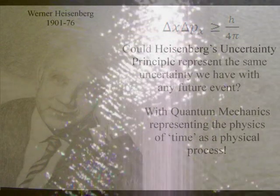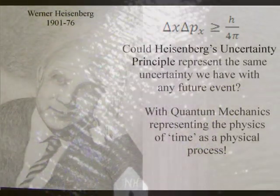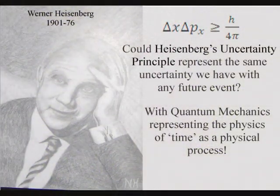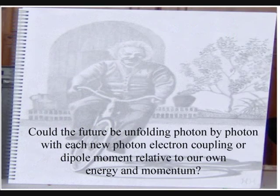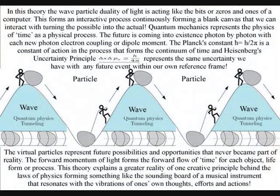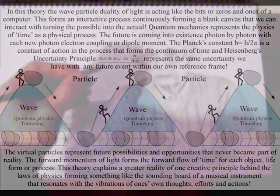The second postulate is that at the smallest scale of this process, Heisenberg's uncertainty principle — formed by the wave function — is the same uncertainty we have with any future event. In this theory we have free will, because the wave-particle duality of light is acting like the bits, or zeros and ones, of a computer. This forms an interactive process continuously forming a blank canvas that we can interact with, turning the possible into the actual.